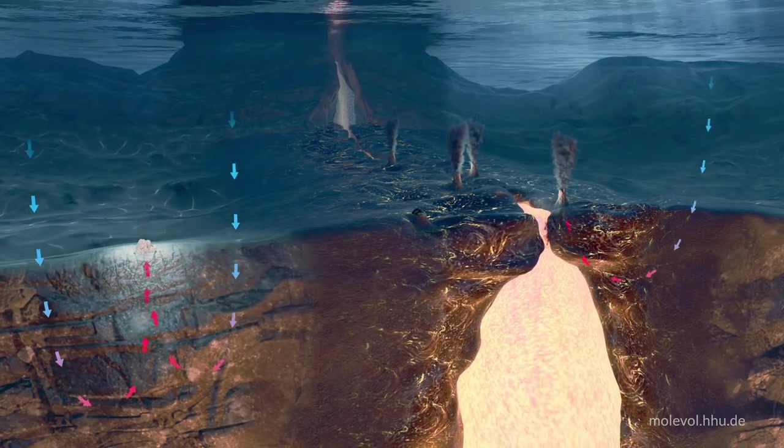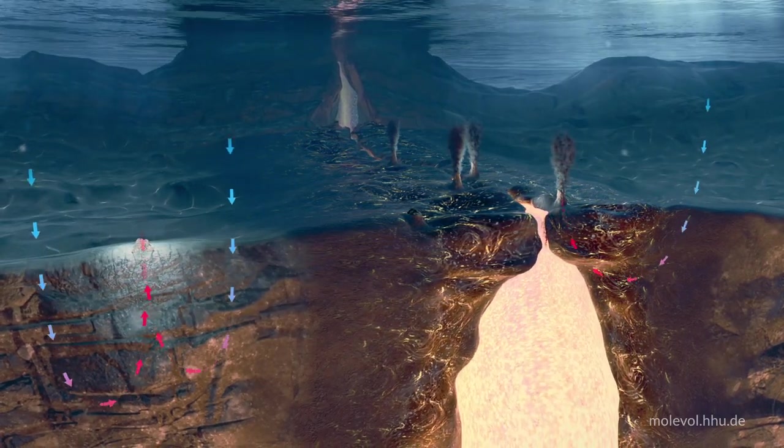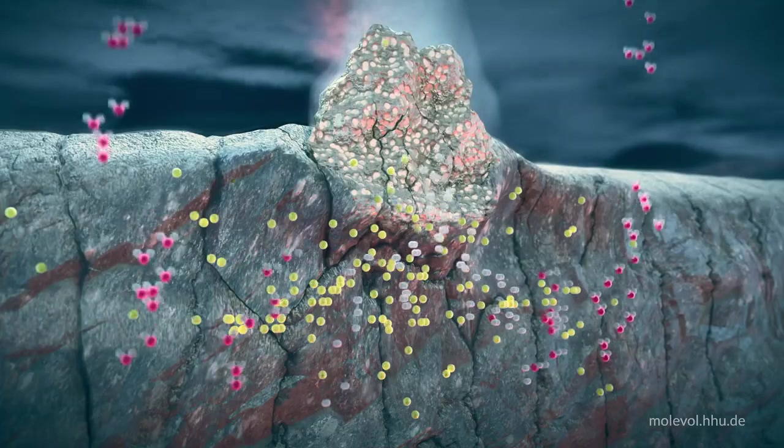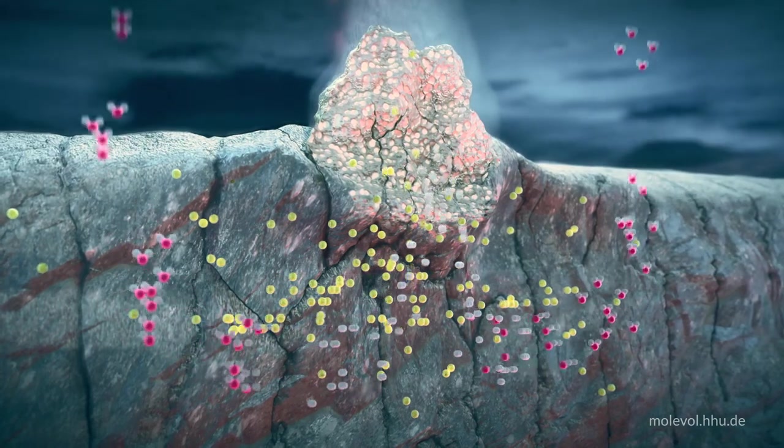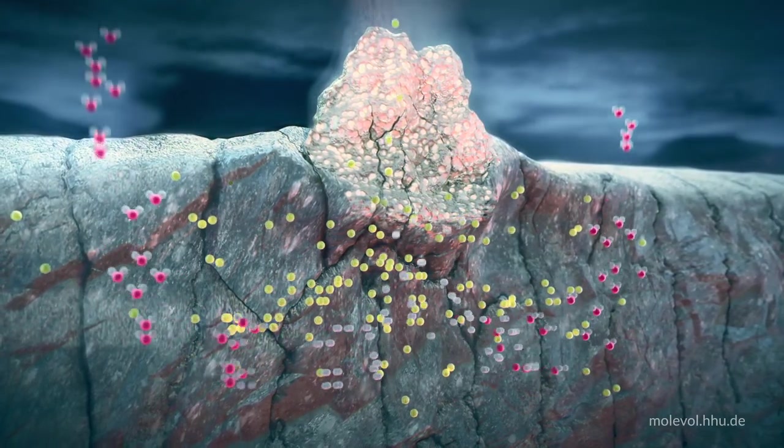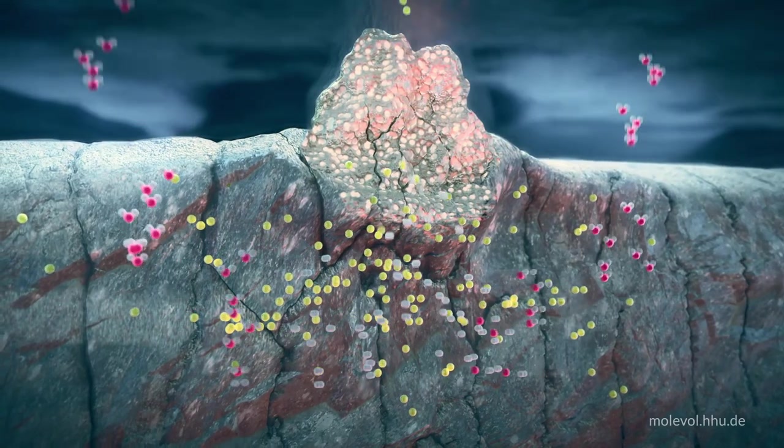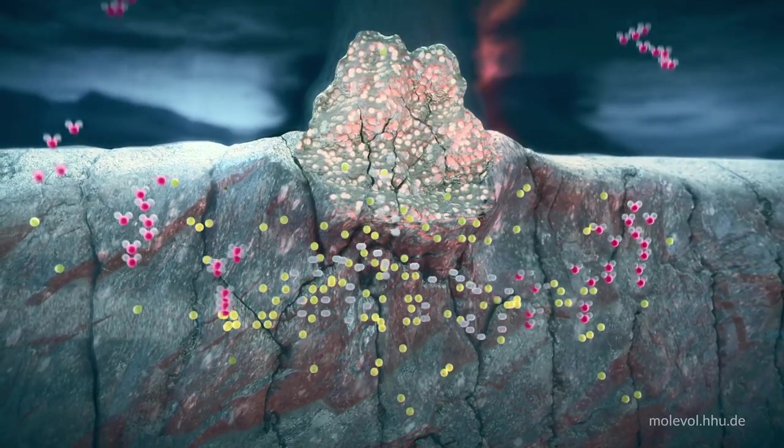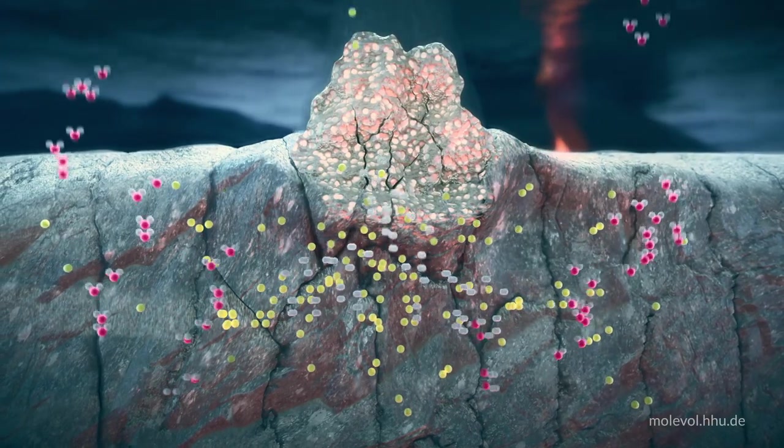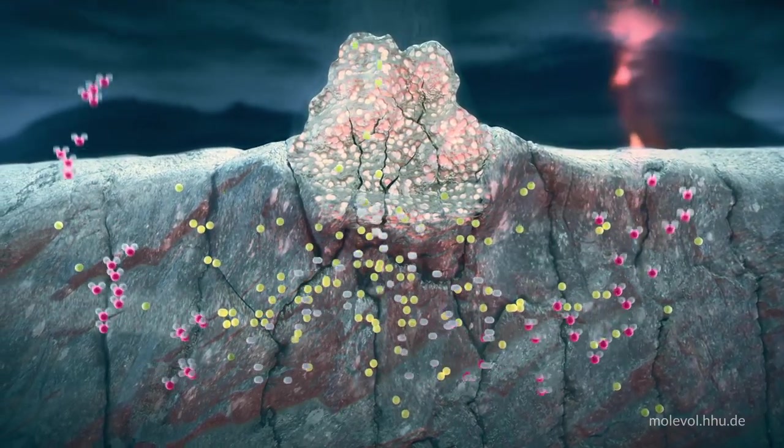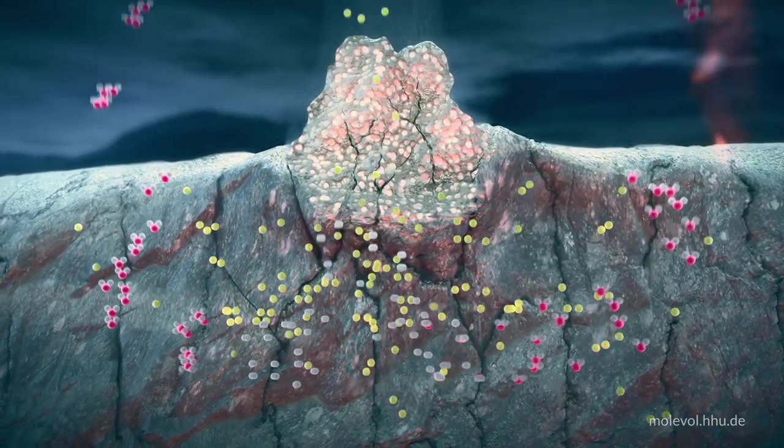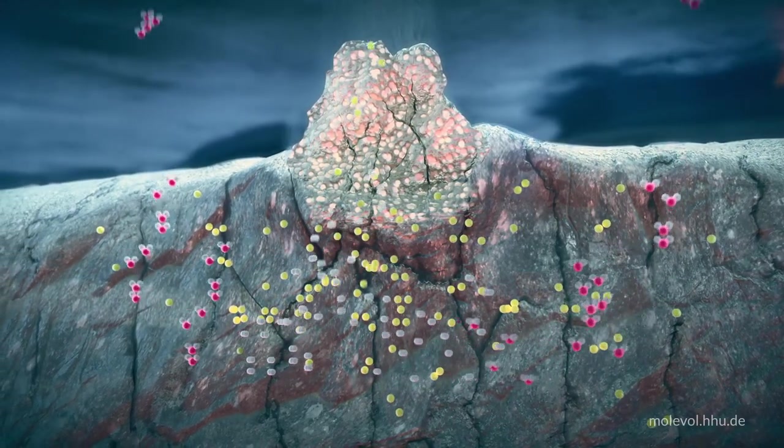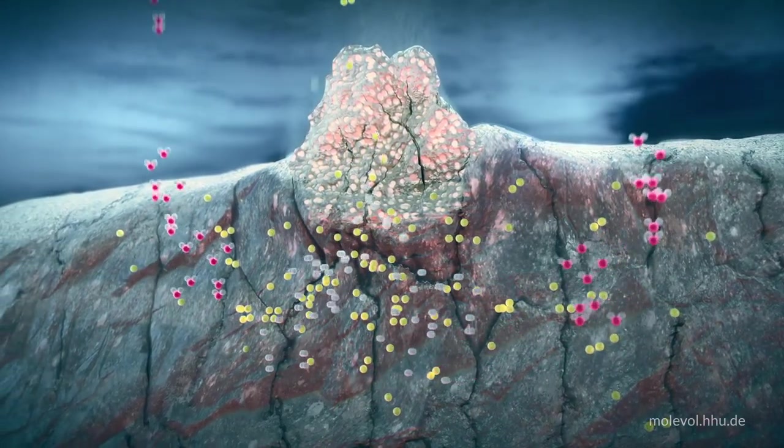Serpentinization generates chemical energy in the form of hydrogen gas. If we zoom in, we can see how hydrogen is produced. During serpentinization, the circulating water reacts with reduced iron minerals in the crust. They convert water into molecular hydrogen, shown here as white balls, while the oxygen in water molecules, shown here in red, remains in the crust as iron oxides.